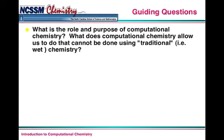What does computational chemistry allow us to do that cannot be done using traditional, otherwise known as wet chemistry? Wet chemistry is probably what you've done in a laboratory with test tubes and beakers and Bunsen burners and all that kind of stuff.